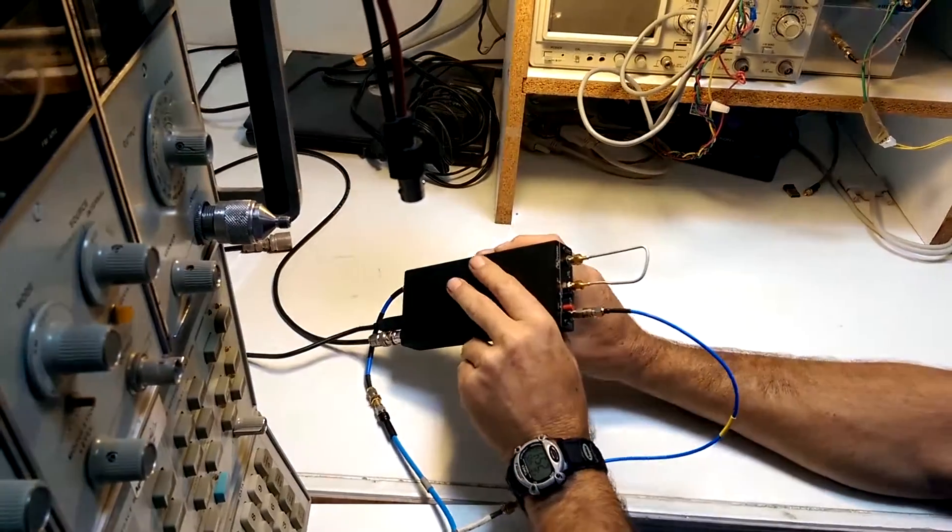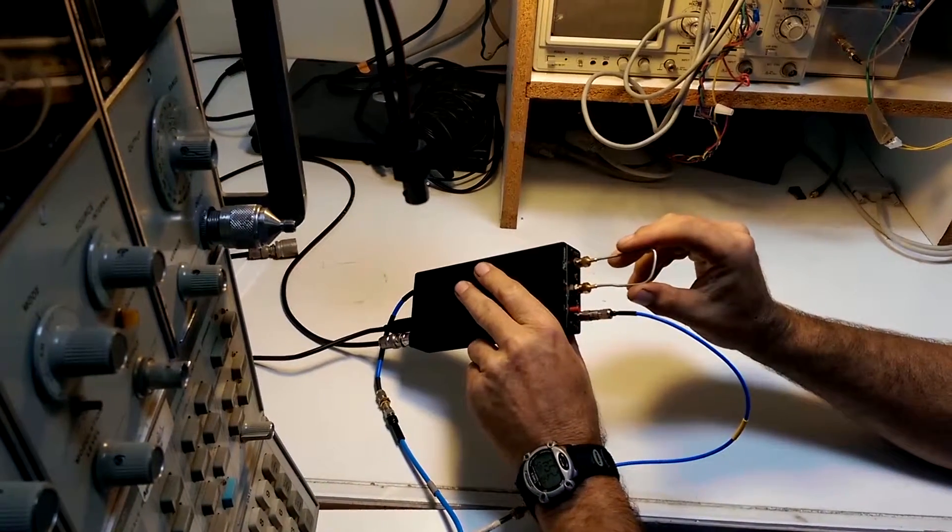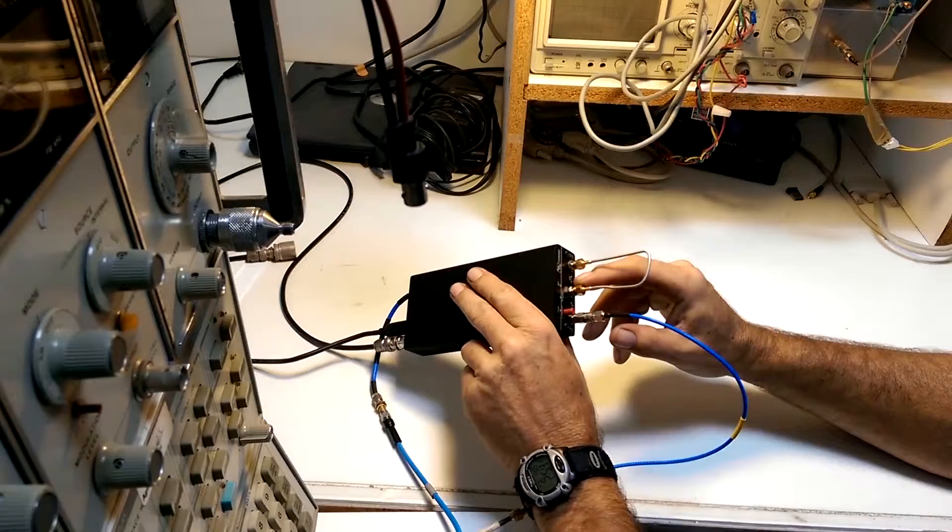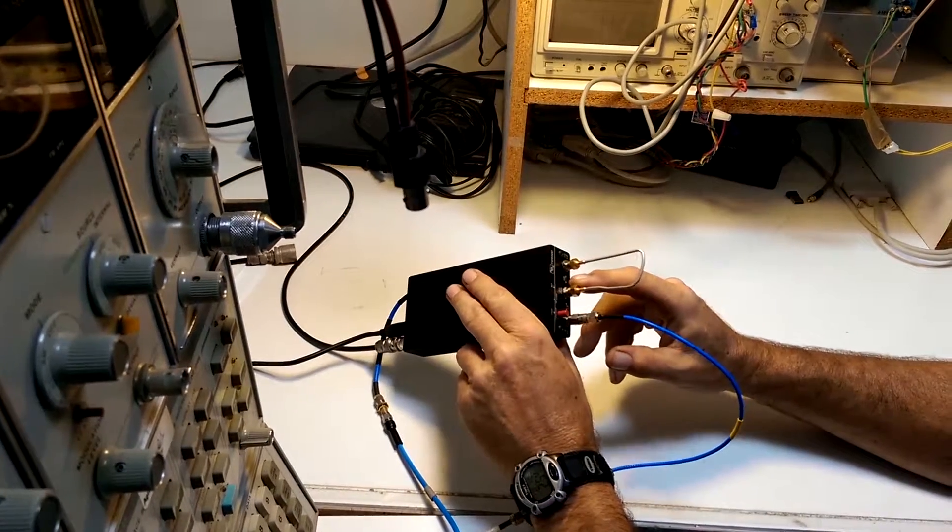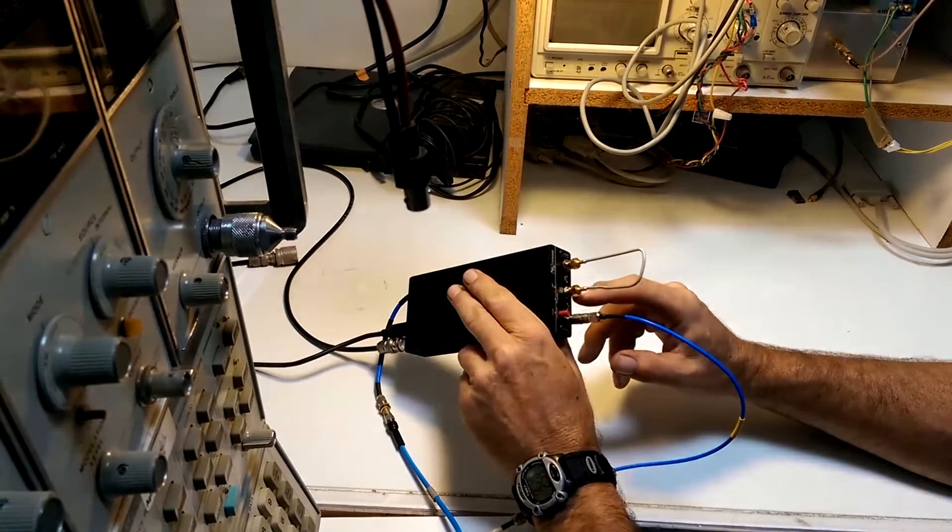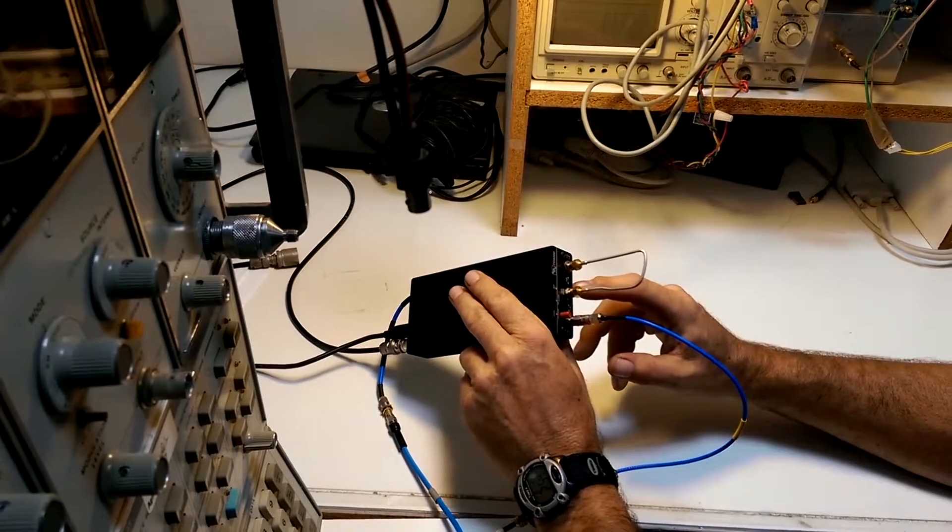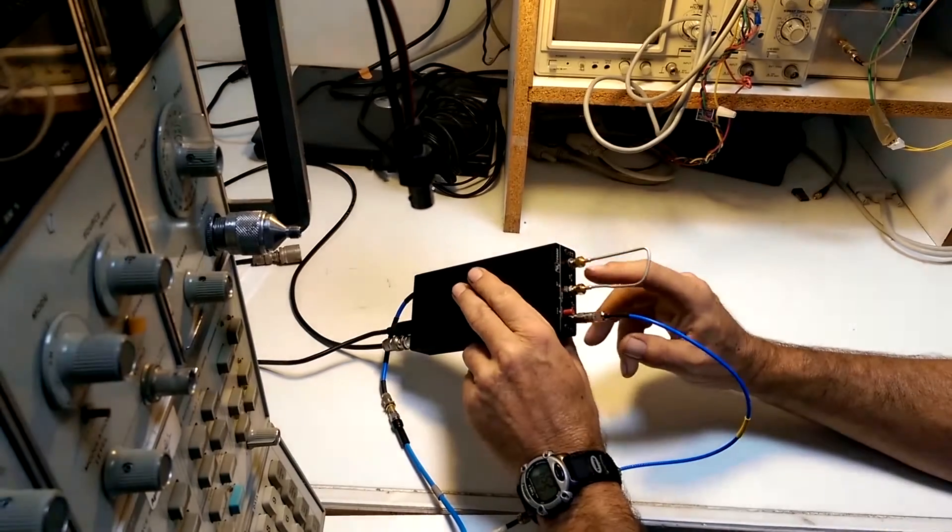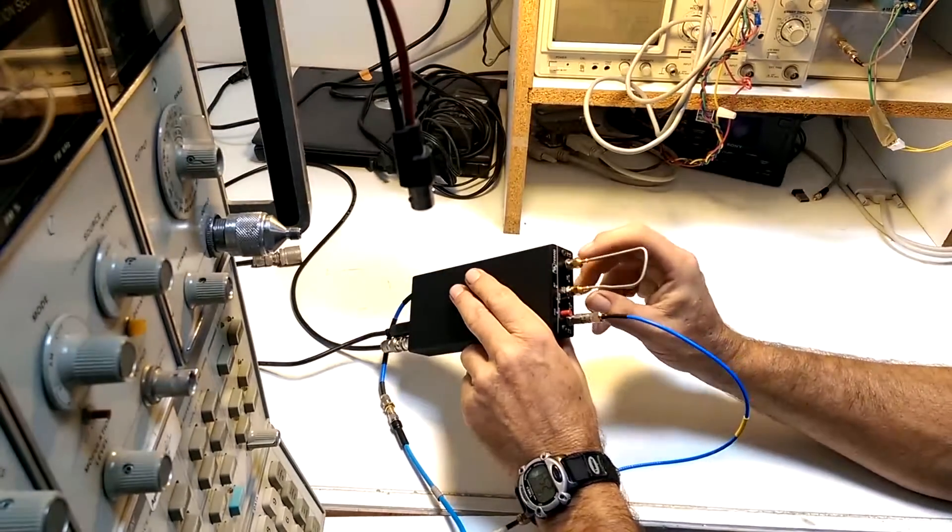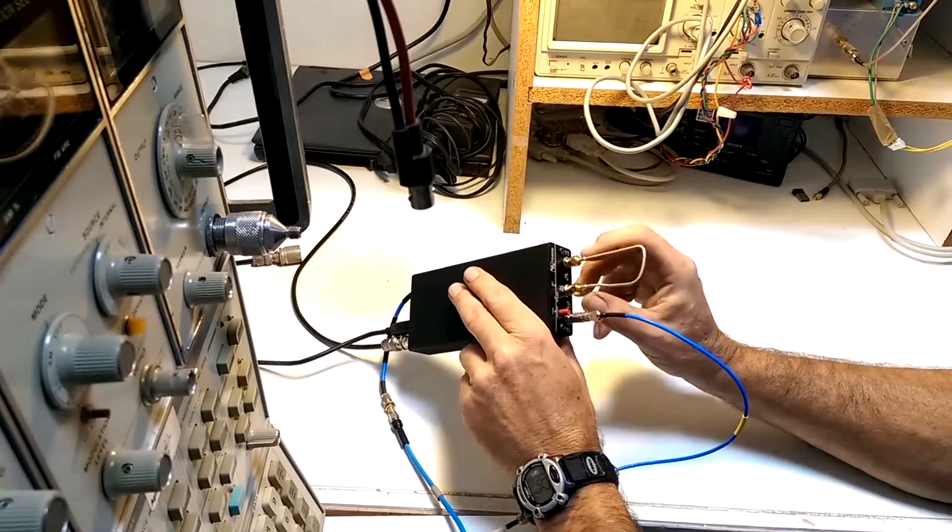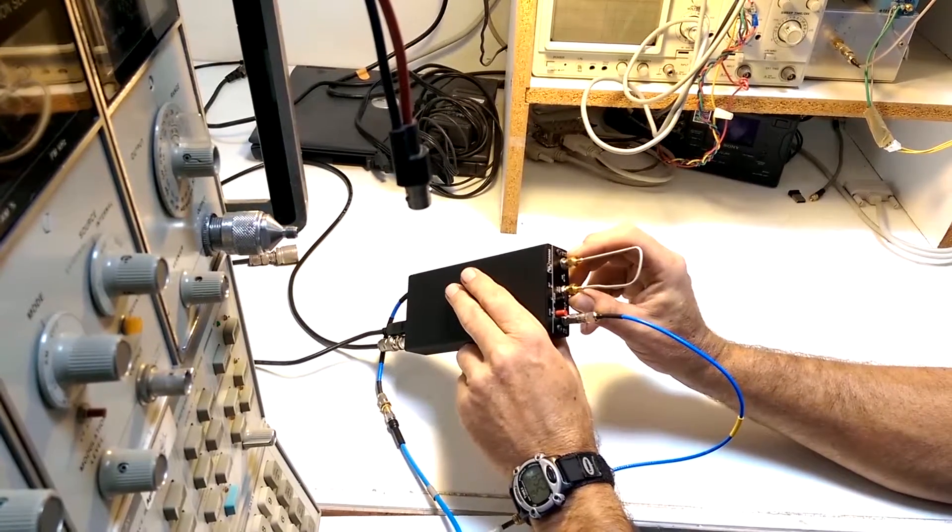Now on the front panel we have to have a jumper cable that connects the internal signal generator of the 6000 to one of two places. For high band of the 8566 we connect it like this. If we were to do low band we'd move it over here. But for high band operation we have the jumper set here.